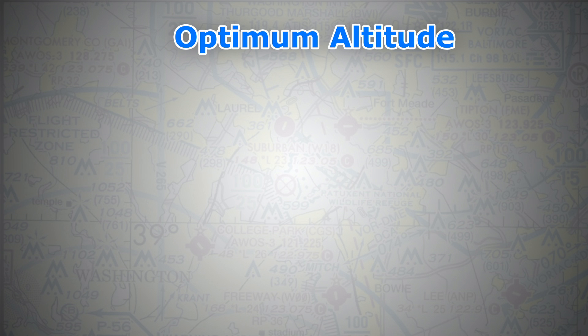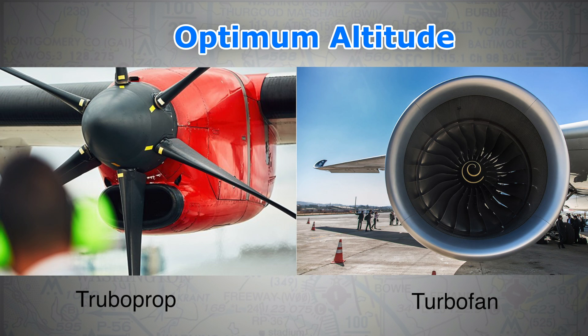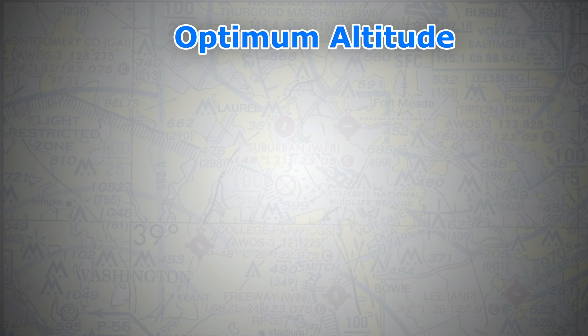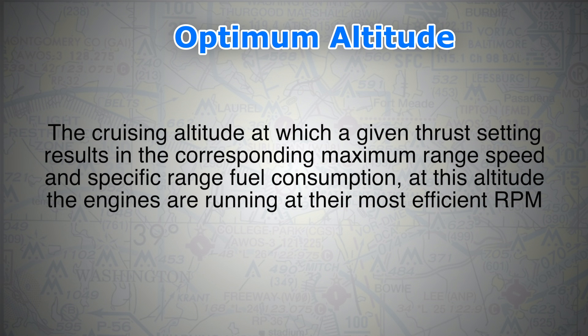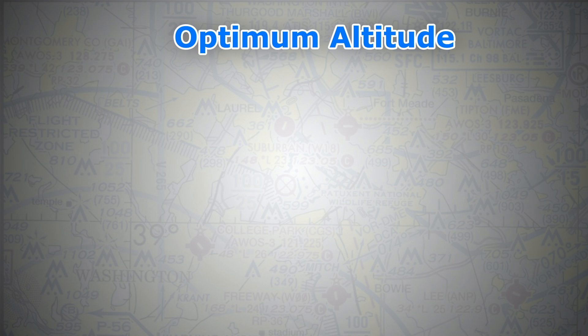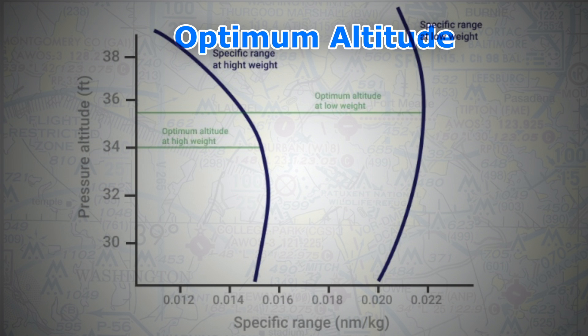Last but not least, let's talk about the optimum altitude. Please keep in mind that the optimum altitude concerns turboprops and turbofans rather than propeller-driven airplanes. The optimum altitude is the cruising altitude at which a given thrust setting results in the corresponding maximum range speed and specific range fuel consumption. This means at this altitude the engines are running at their most efficient RPM — or as referred to in turbofans, N1. A specified thrust setting results in a speed that produces the maximum range of the aircraft.